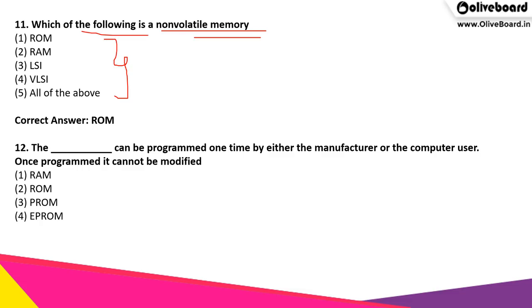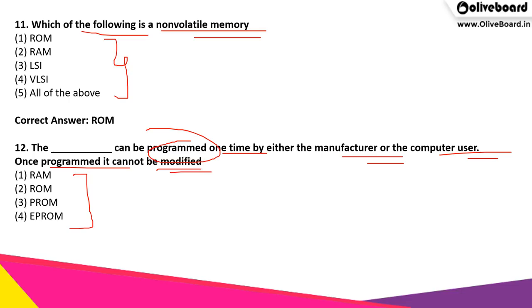The next question: what can be programmed one time by either the manufacturer or the computer user? We can program it only once — once programmed, it cannot be modified. What is it that can be programmed only once and cannot be modified after that? The correct answer is PROM, which is programmable read only memory.